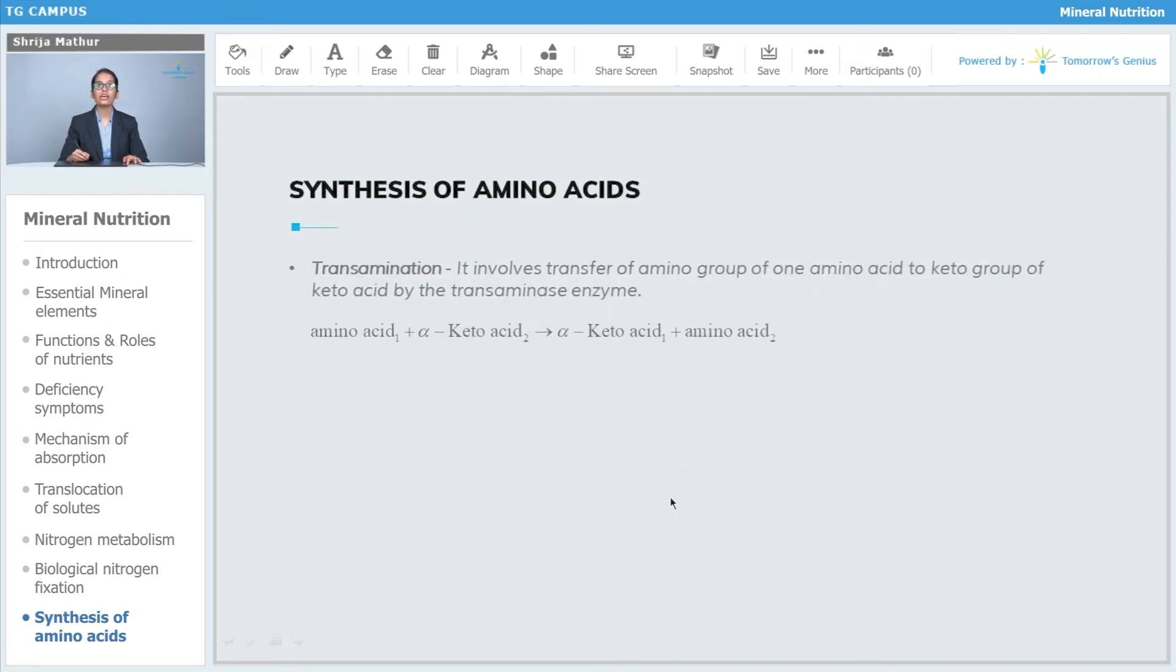The second is transamination. It involves the transfer of the amino group of one amino acid to the keto group of a keto acid by the transaminase enzyme.